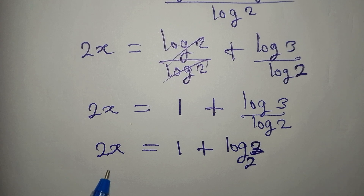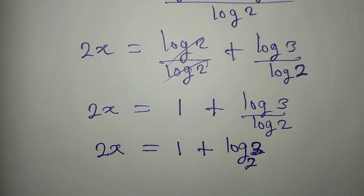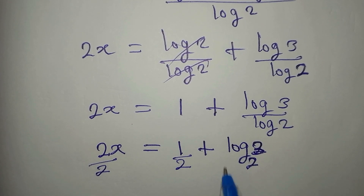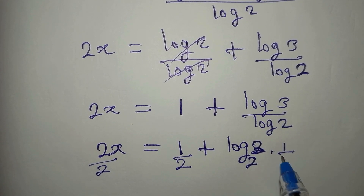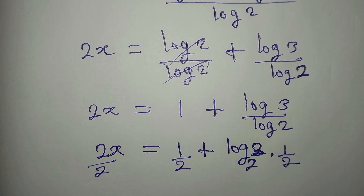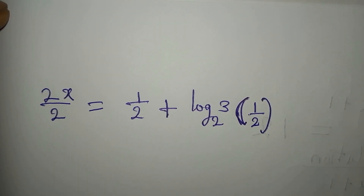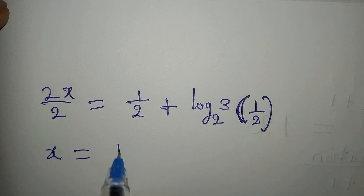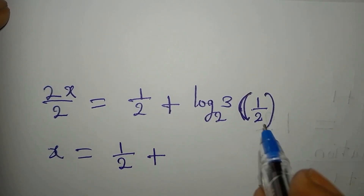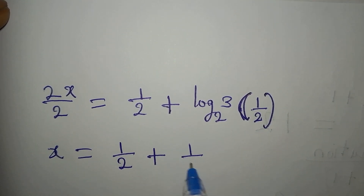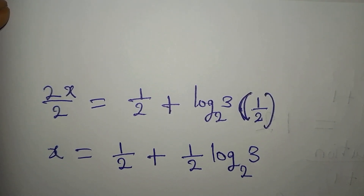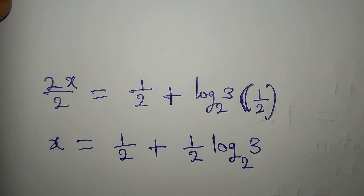We still have to divide everything by 2, so x is equal to one half plus one half times log 3 to the base 2. This becomes the value of x, and as we always do, we confirm our answer.